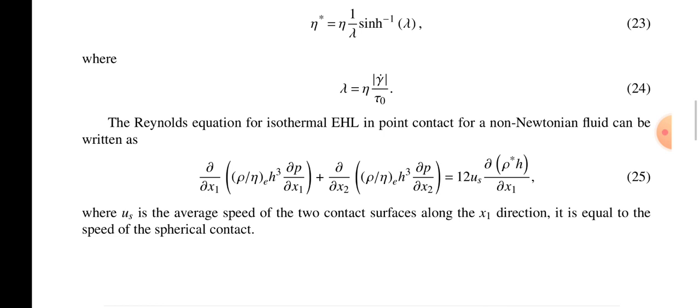Where uₛ is the average speed of the two contacting surfaces along the x₁ direction, equal to the speed of spherical contact. This is the Reynolds equation for isothermal EHL in point contact for a non-Newtonian fluid written in this format.